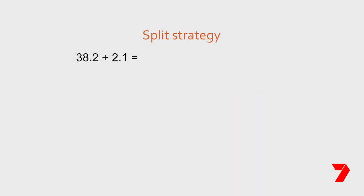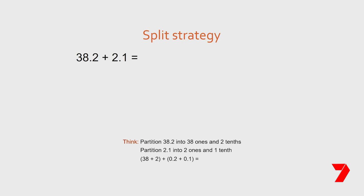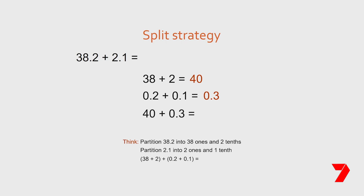The split strategy requires us to look at both numbers and break them into their place value parts. Partition thirty-eight and two tenths into thirty-eight ones and two tenths. Partition two and one tenth into two ones and one tenth. We can then add the whole numbers — thirty-eight add two — and add the decimal numbers — two tenths add one tenth. Thirty-eight add two equals forty. Two tenths add one tenth equals three tenths. Forty add three tenths gives us forty and three tenths.